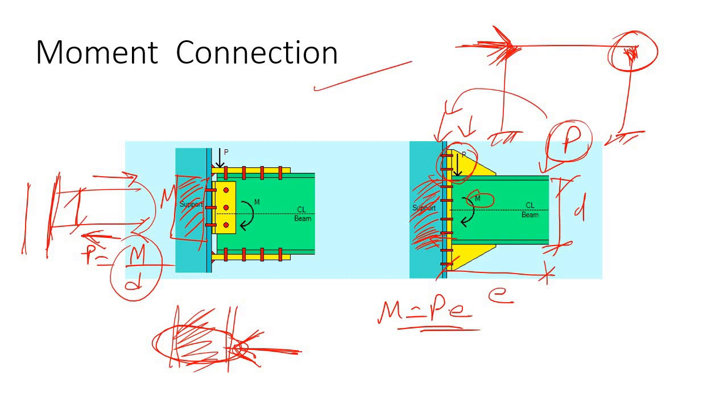Now come to the next one: bearing connection. Actually I don't find any proper picture from Google so I'm unable to put it here. Bearing connection is simple - let's say you have a structure like this: this is one column and this is another column. I'm sorry, the drawing today is very bad, I don't know, maybe due to orientation problems.